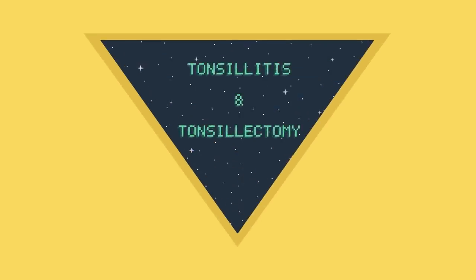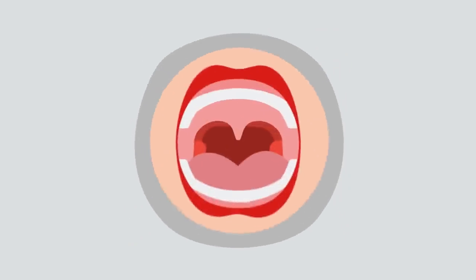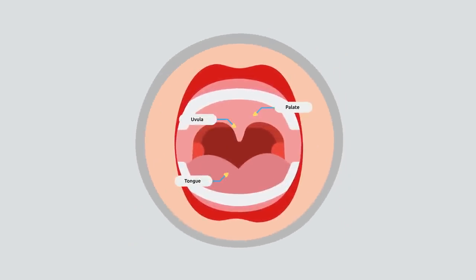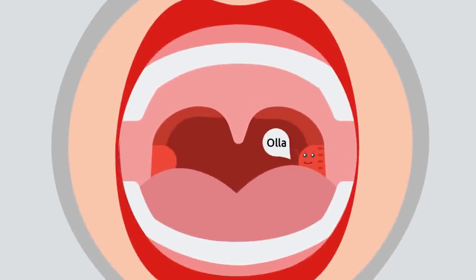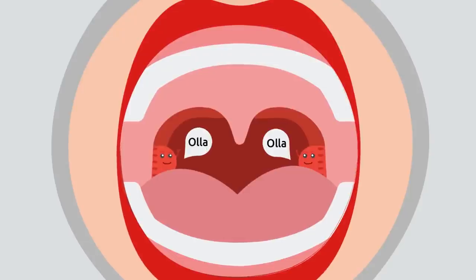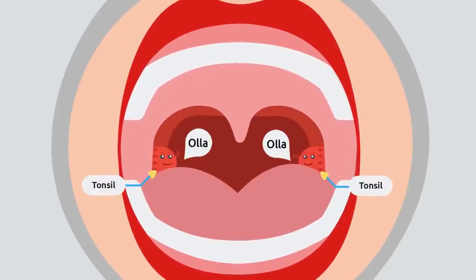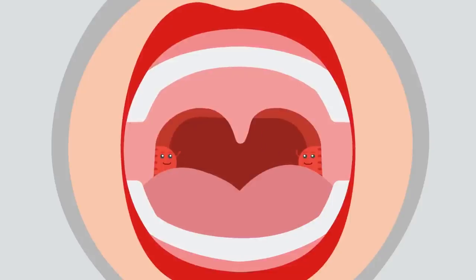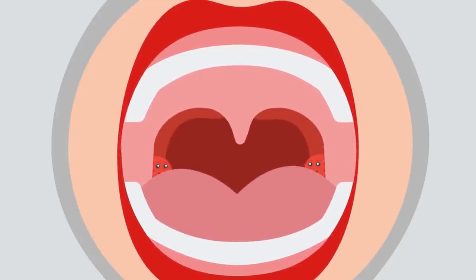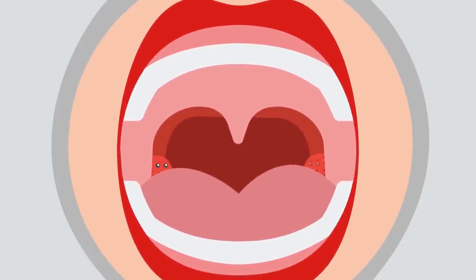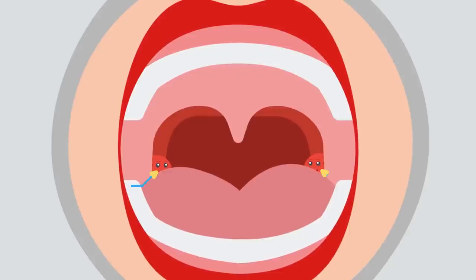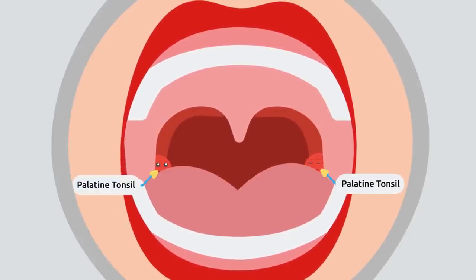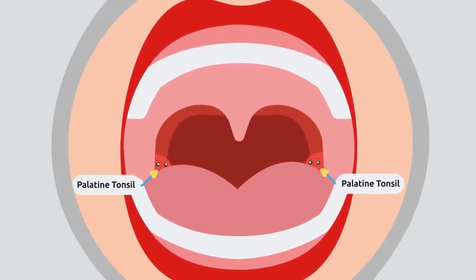Tonsillitis and Tonsillectomy: when a person opens his mouth, one of the most important organs that help fight off infection are the tonsils. They are often small and hidden between the two arches, and are known as palatine tonsils due to their location near the palate or roof of the mouth.